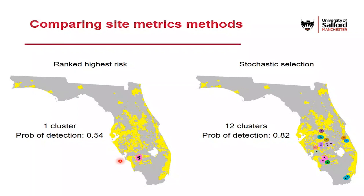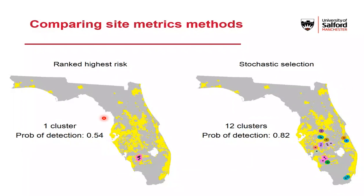If we just rank sites and take the top ones we get this result, shown on the left — we'll basically be condensing all of our surveillance resource into one site. That's understandable because there's a lot of risk associated with one particular area, so we have spatial autocorrelation between our individual sites: all the highest-risk sites are clustered closely together. The problem with this is you're putting all your eggs in one basket. If the pathogen actually entered somewhere else — say at the bottom of the state — it might never reach this cluster, and we'd miss infection altogether. So the probability of detection when we just take those top-ranked sites is actually quite low.